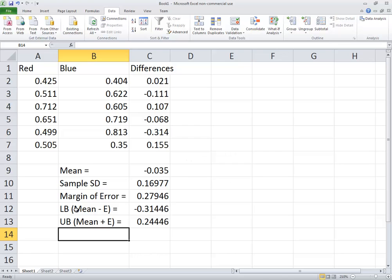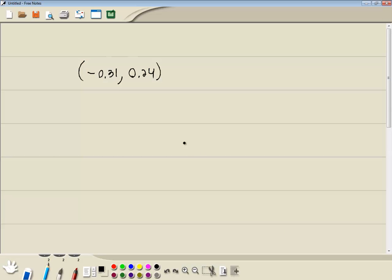And these right here are confidence intervals. So it goes from negative 0.31 to 0.24 rounded to two decimal places. And I have that written out here. Negative 0.31 to 0.24.